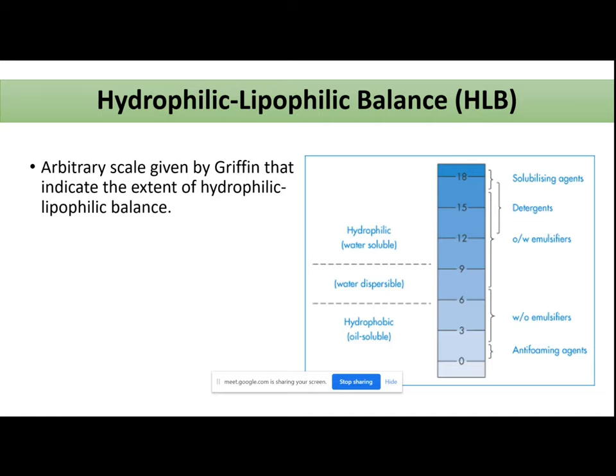The next topic is hydrophilic-hydrophobic lipophilic balance, which is also called HLB value or HLB scale. We have many types of surfactants — ionic, non-ionic; ionic further includes cationic and anionic surfactants. Now, which surfactant to use for a particular preparation — how do we decide that?